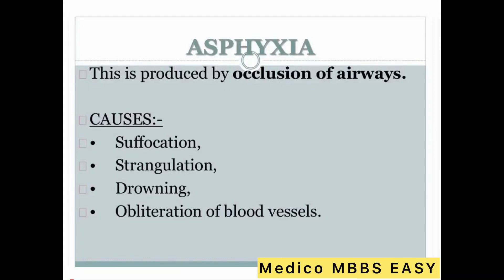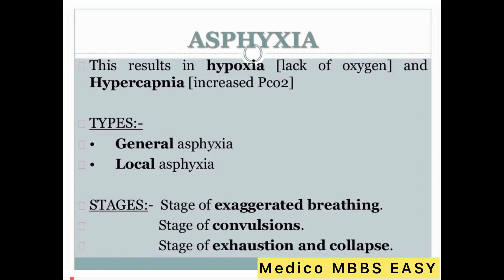Today our topic is asphyxia, which is produced by occlusion of airways. Causes include suffocation, strangulation, drowning, and obliteration of blood vessels. This results in hypoxia — lack of oxygen — and hypercapnia — increased partial pressure of carbon dioxide. Types include internal effects and local effects. The stages are: stage of excited breathing, stage of convulsion, stage of exhaustion, and stage of collapse.